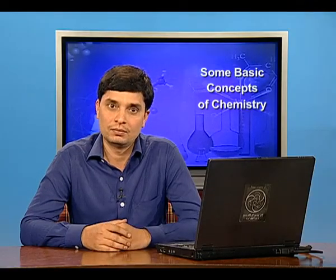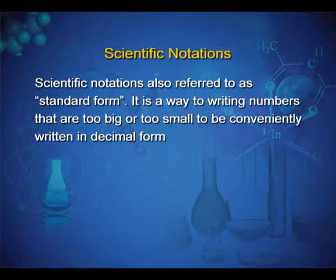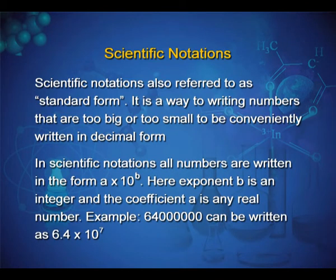Scientific notation, also referred to as standard form, is a way of writing numbers that are too big or too small to be written in decimal form. In scientific notation, all numbers are written in the form a × 10^b.